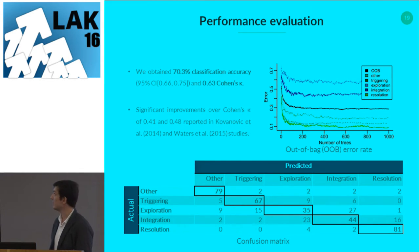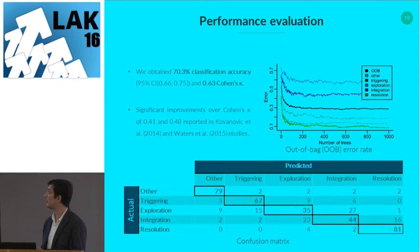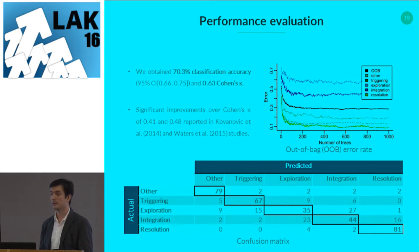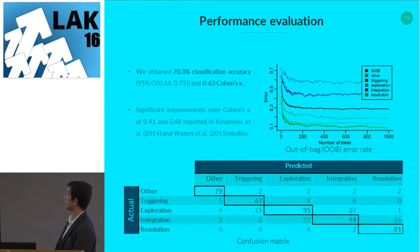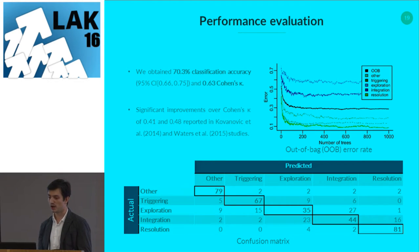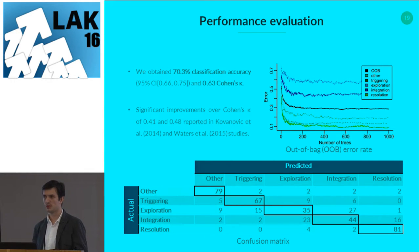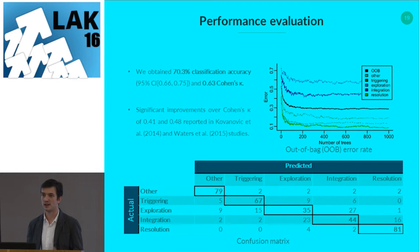We obtained a classification accuracy of 70.3% and a Cohen's Kappa of 0.63 — significant improvements over our previous work, which had only a kappa of 0.41 and 48% accuracy. The out-of-bag error rate with 1,000 trees stabilizes well; you could actually get away with 200. Decision trees are fast once built, so 1,000 trees is not a big performance hit.